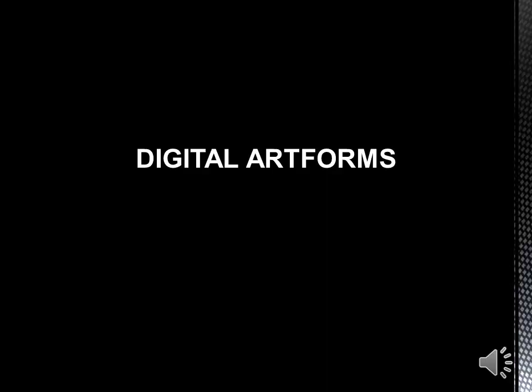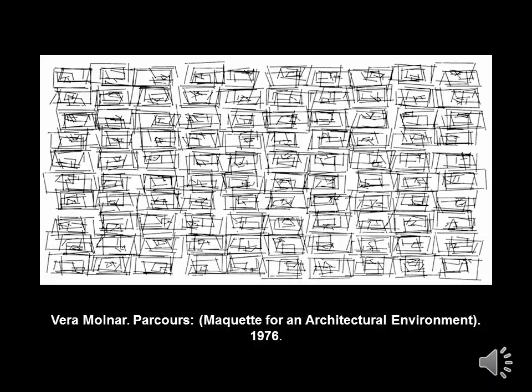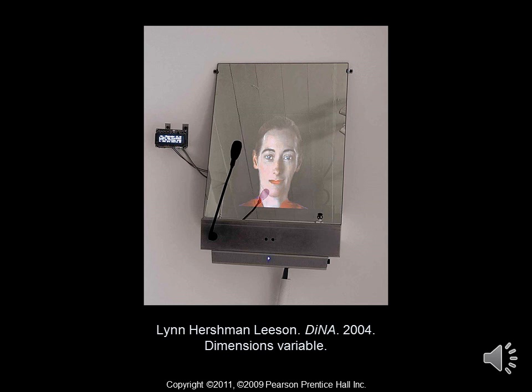Digital art comes in many forms, but the one thing consistent about it is that it's done with the aid of a computer. Early forms of digital art were done on a plotter printer, which is design controlled by a computer. This work here is an example of that — it's by Vera Molnar, Parcours: Maquette for an Architectural Environment from 1976. This is a video cyborg created by artist Lynn Hershman Leeson, titled Dina from 2004. Dina was exhibited in art galleries as a video installation and is an interactive work where the viewer is invited to walk up and speak to it via a microphone. The viewer is invited to ask questions of Dina, who is running for the fictional office of Telepresident. In order to answer the viewer, Dina does an automatic search on the internet for her answers, so whatever comes out will vary from person to person according to what question they ask.